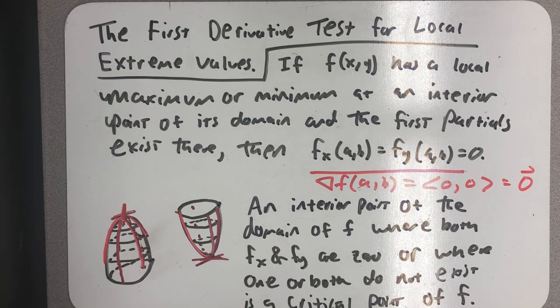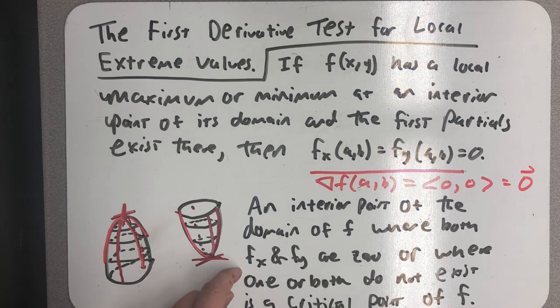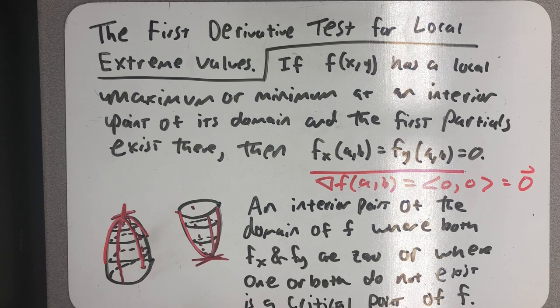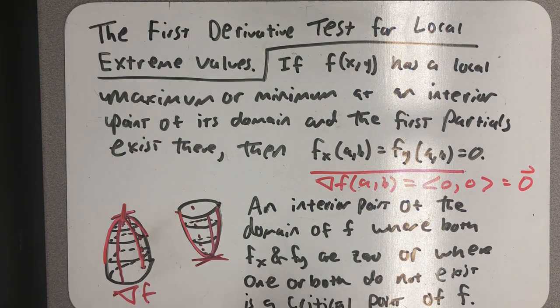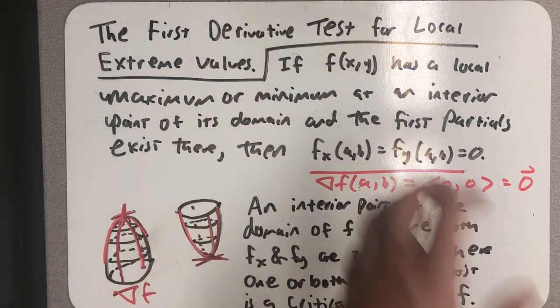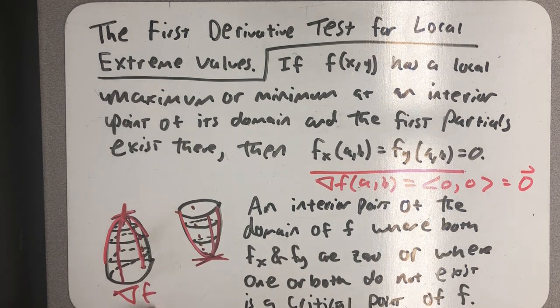Definition here at the bottom of the board. An interior point of the domain where both fx and fy are 0 or where one or both do not exist is a critical point of f. This is a very familiar-sounding definition of critical point. In Calc 1, those are places where the derivative is equal to 0 or does not exist. For us, they're places where the gradient vector is 0 or where the gradient doesn't exist. This is written very specifically that one or both of our first partials doesn't exist. Well, if one or both doesn't exist, then the gradient vector doesn't exist. So the first derivative test for local extreme values and this definition of critical point are really talking about the gradient vector.